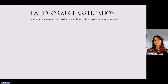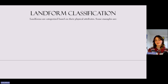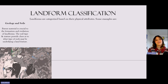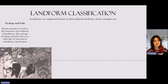Landforms are categorized based on their physical attributes, of which there are many. Some examples we'll use this year include geology and soils — the parent material is crucial to the formation and evolution of landforms, and soil type and texture from the parent material will help provide clues as to what type of rock might be underlying a land feature.